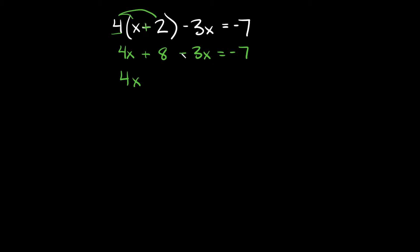Don't forget you always have to bring the sign that's in front of it with it. So since there's a minus sign right here next to the three x I have to bring that minus sign right there also. So minus three x and then this is plus eight. Plus eight and then that's equal to negative seven.